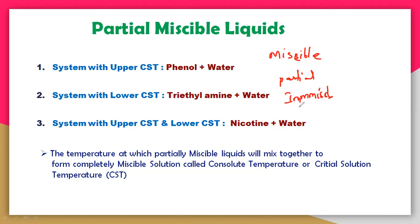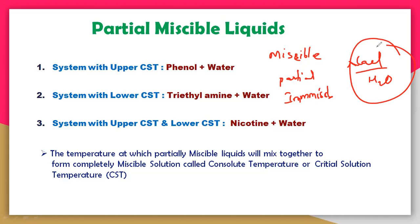Miscible means complete solubility. For example, NaCl dissolved in water is a perfectly miscible solution — NaCl is completely miscible in water. In a miscible solution, you get a clear, homogeneous mixture with only one phase. But partial means it has very limited solubility — the solute dissolves in the solvent only to a lesser extent.